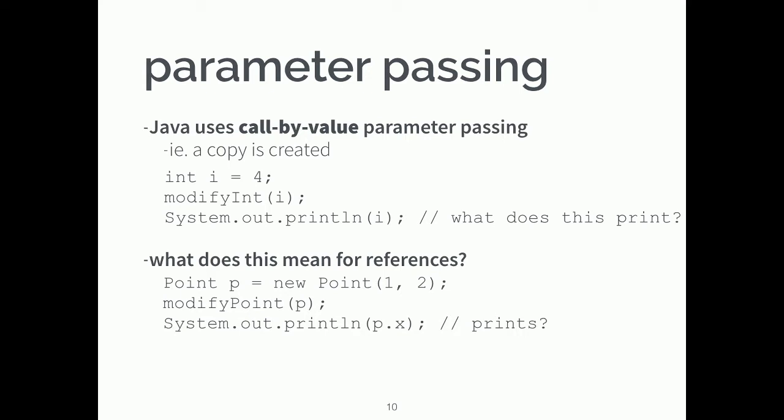This is different when we talk about references. When we pass a reference, what gets passed is the address. If I create a point and pass it into 'modify point' and do something to it, I should expect the contents to be different — because I passed in the address. Whatever that address is pointing to is what's being modified, while the address itself is unmodified.